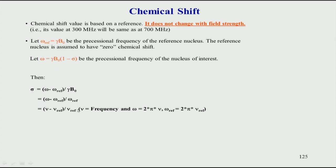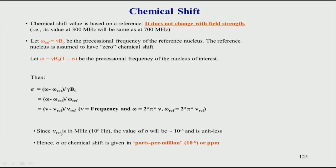Chemical shift is always calculated by taking the difference between your molecule's hydrogen and the reference hydrogen, then dividing by the main magnetic field value, which is in megahertz. Because V-reference is in megahertz, we get a value in megahertz. Taking the denominator as 10 to the power 6 means it becomes 10 to the power minus 6 in the numerator, and therefore we use the term parts per million. The sigma values we obtain are typically in parts per million.